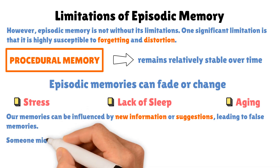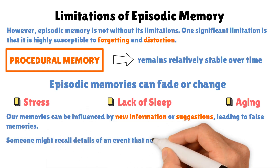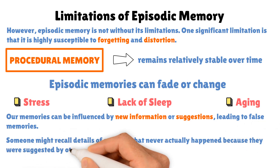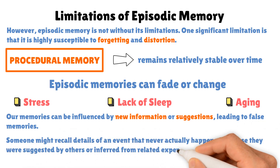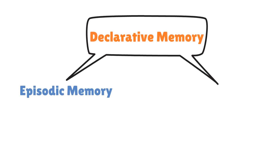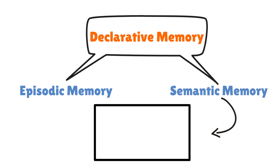For example, someone might recall details of an event that never actually happened because they were suggested by others or inferred from related experiences. Episodic memory is one of two types of declarative memory. The other type is called semantic memory. To learn about semantic memory, watch this video next.